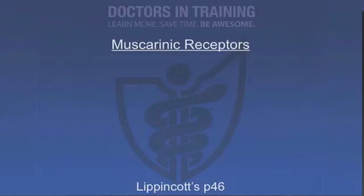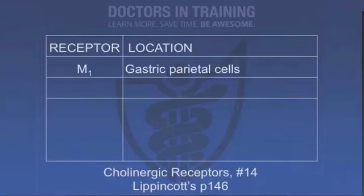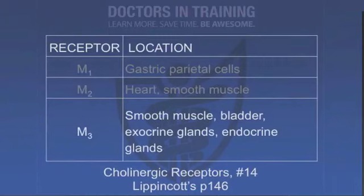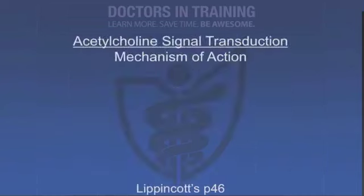There are five subclasses of muscarinic receptors: M1, M2, M3, M4, and M5. We know a fair amount about M1, M2, and M3 — where they work and where they're located. We know less about M4 and M5; they're located in the central nervous system, and we're not sure if they have any peripheral function. M1 receptors are located primarily in the gastric parietal cells. M2 receptors are located in the heart and also in smooth muscle. M3 receptors are found in smooth muscle, the bladder, and exocrine and endocrine glands.